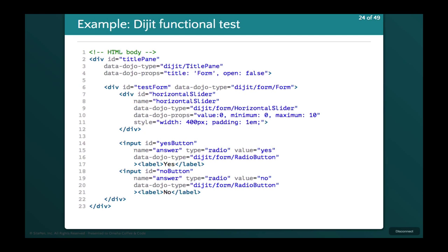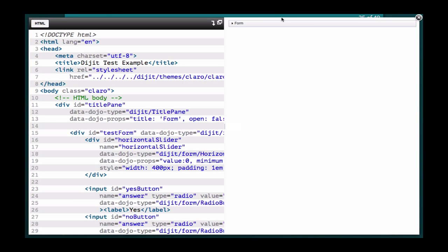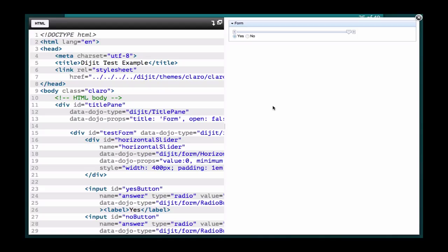At SitePen, we primarily use Dojo, and Dijit is the user interface library for Dojo. Here's an example using that. We've got a page with widgets created declaratively: a form object, some radio buttons, and a horizontal slider. The script tag parses everything out, and when it's parsed everything in the browser, it sets a global variable ready equal to true — and that's important, as I'll show next. When we run it, we get a page with a form. Clicking on it drops down a set of radio buttons and a slider. We'll test that if we click the slider and drag it all the way to the end, and click the radio buttons, the form gives us back 100% for the slider and yes or no for the radio buttons.